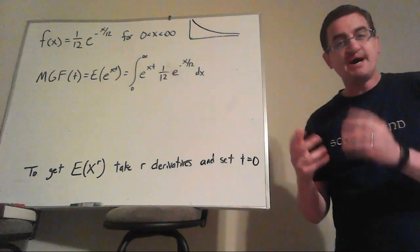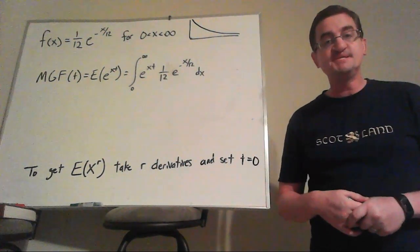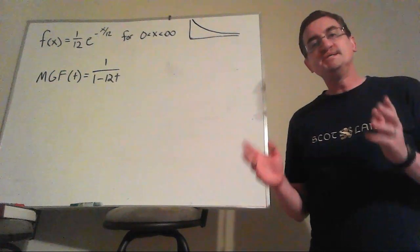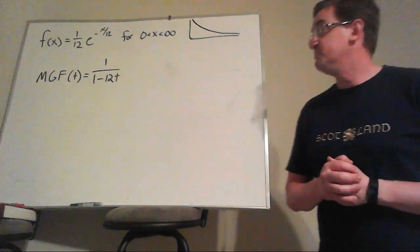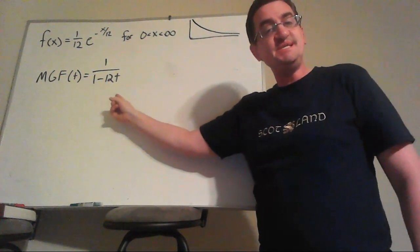It's not a secret how to calculate this, but it does take a little more time to practice it than what we really have in this class. So don't worry about this. Instead, let's practice how to use this to get those moments. So for this example, it works out to be 1 over 1 minus 12t.